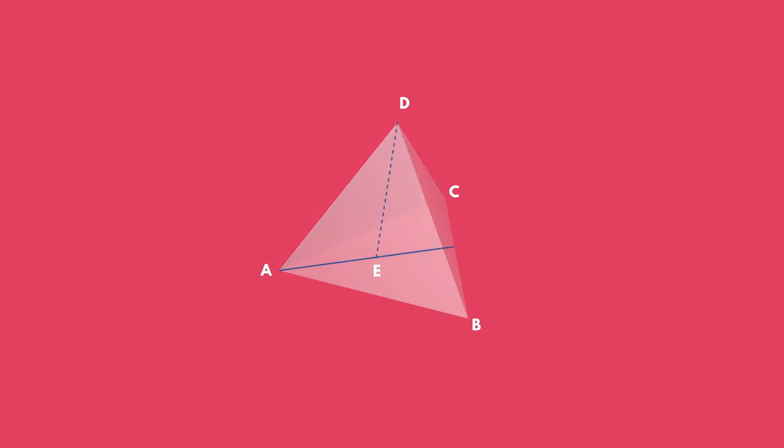We name E the centroid of the base ABC and F the midpoint of the side BC. That means that DE is the height and DF the slant height of the regular tetrahedron. Let A be the length of an edge of a regular tetrahedron.